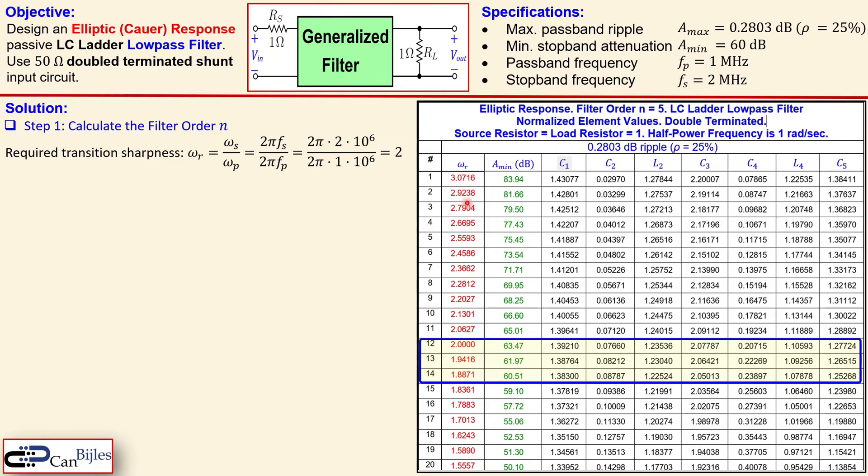So we need to fulfill this and this column together according to our specification. Now we see here 2 and it's now 63.47 which is fine, but if I go up that's not enough for our transition sharpness. It will be of course okay for A_min but not for our ω_r. Going down in ω_r it's even better but then at some point I get lower than 60 dB which is also not allowed.